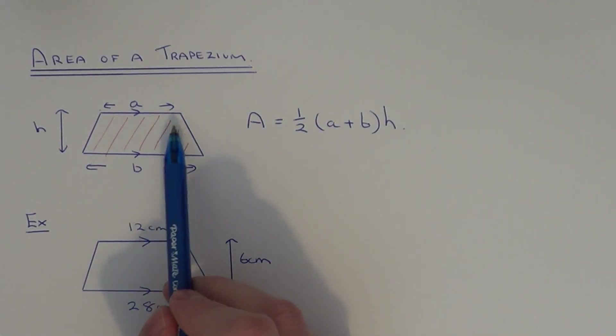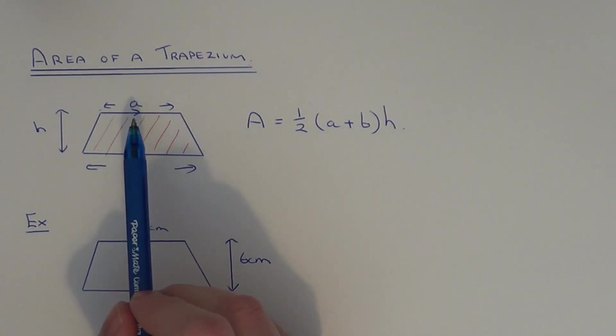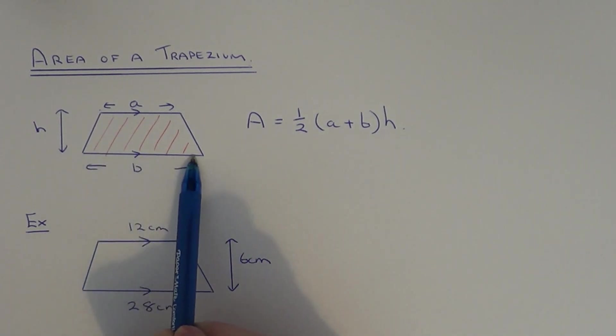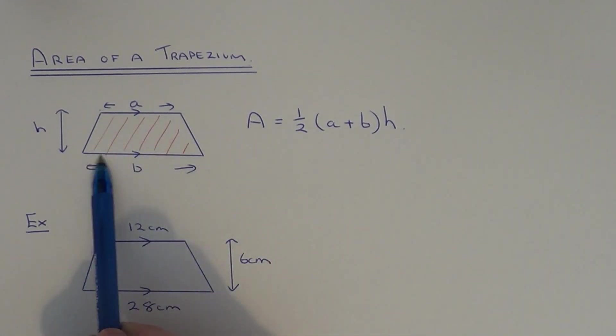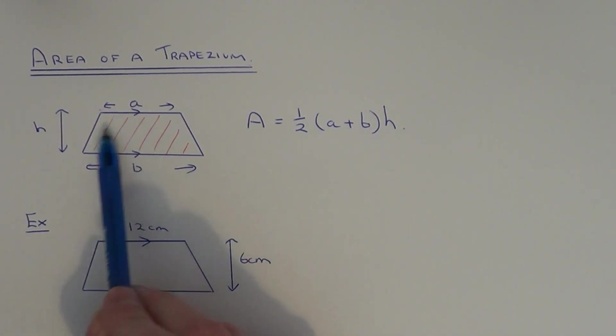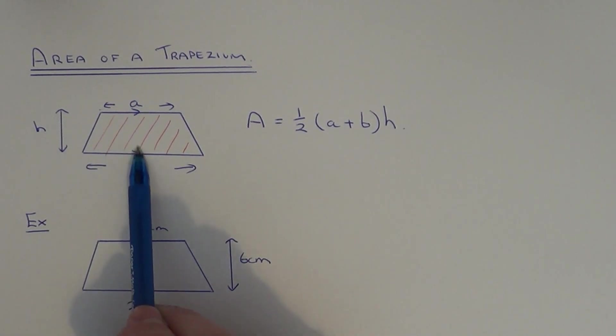A trapezium is a shape with four sides and it has exactly one pair of parallel sides. In the diagram here I've labelled the parallel sides little a and little b. h is the distance between the two parallel sides, so it's the height of the trapezium.